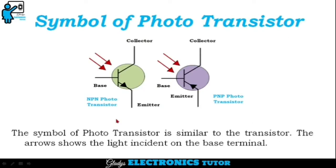This is the symbol of the NPN phototransistor and PNP phototransistor. The symbol of a phototransistor is similar to the transistor. The arrows show the light incident on the base terminal.